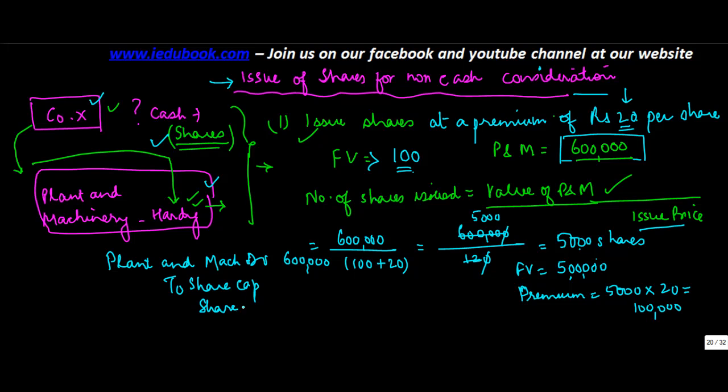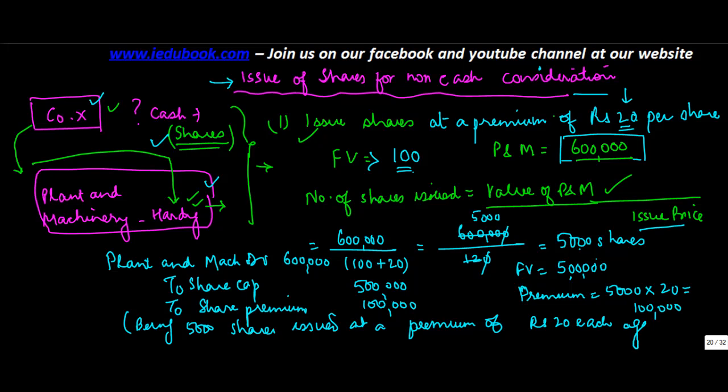Credit to share premium. Being 5,000 shares issued at a premium of rupees 20 each against purchase of plant and machinery.